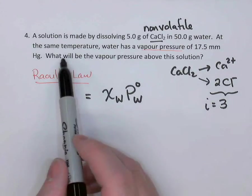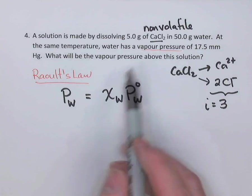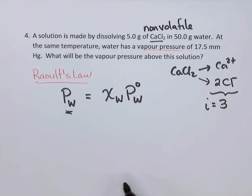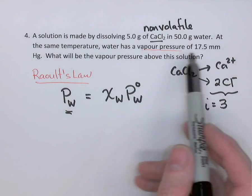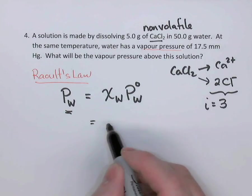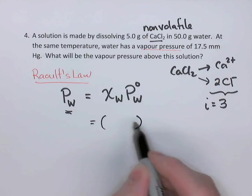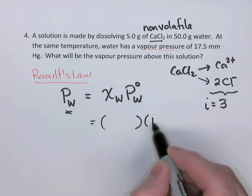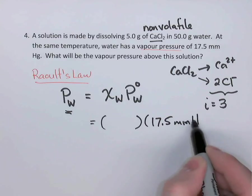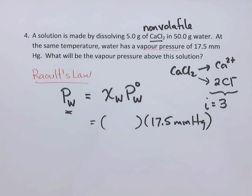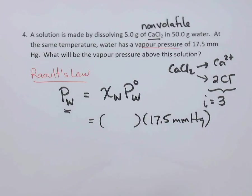Now, looking at the question again, we want to know what's the vapor pressure above the solution. So this is what we're looking for. We were told that the water itself has a vapor pressure of 17.5 mmHg. So if we find the mole fraction of water, we just multiply by 17.5 mmHg, the vapor pressure of the pure water. So let's go find the mole fraction of the water.